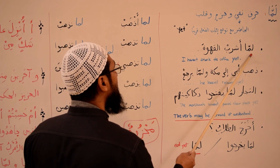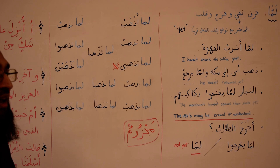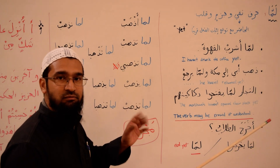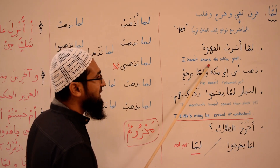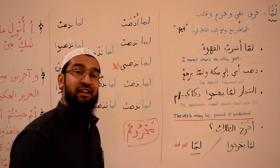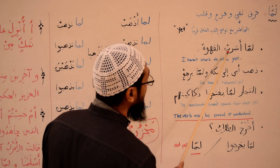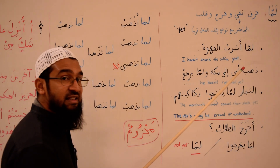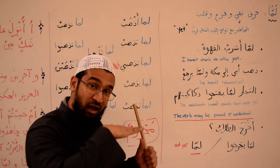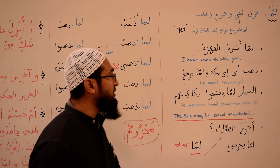An example: لما أشرب القهوة, لما أشرب القهوة — I haven't drunk the coffee yet. Keyword: yet. I haven't drunk it up to this moment, I haven't drunk the coffee yet, but I'm going to drink it soon — that's why we throw in the word 'yet'.